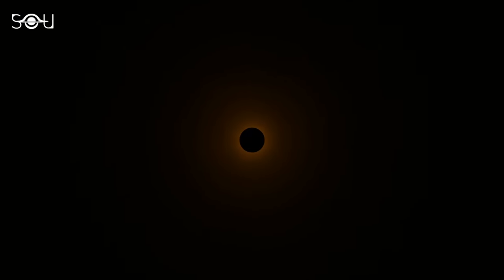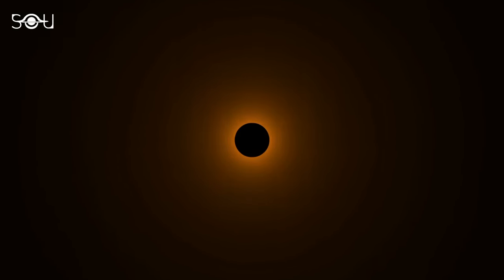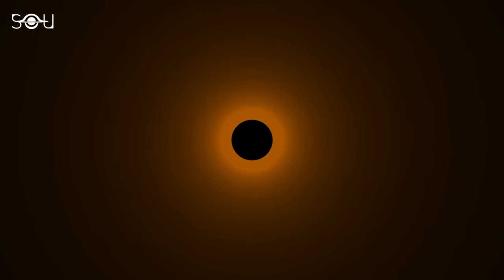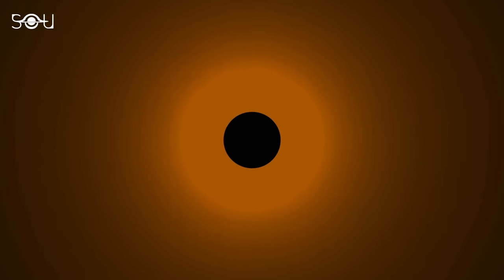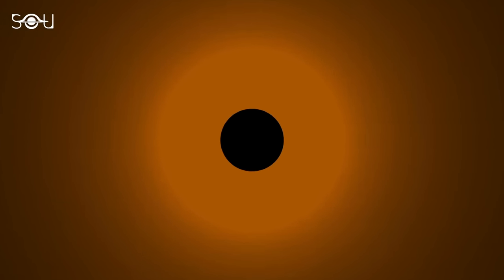A team of scientists created a black hole in a lab and then it mysteriously started glowing. Specifically, they created a black hole's event horizon under laboratory conditions using a chain of atoms.